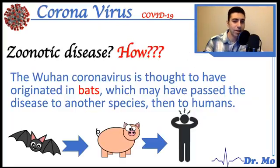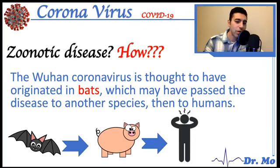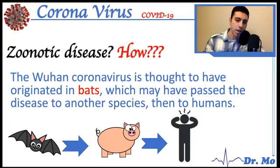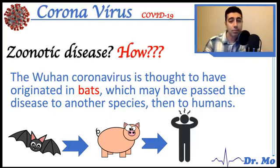The Wuhan coronavirus, currently causing a big outbreak in China, is thought to have originated in bats, which may have passed to another species — most likely pigs — and then to humans. There has been talk about snakes as a possible host, but the evidence is debatable; some scientists support it and some go against it, so I did not include that today.